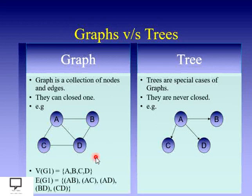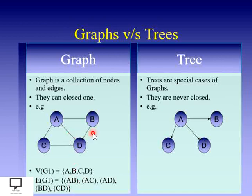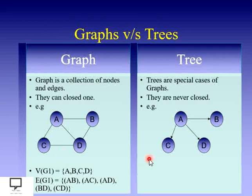To represent graph G1 formally: the set of vertices V is {A, B, C, D}, and the set of edges E contains the edges {A,B}, {A,C}, {A,D}, {B,D}, and {C,D}. These are the edges available in the given graph G1.